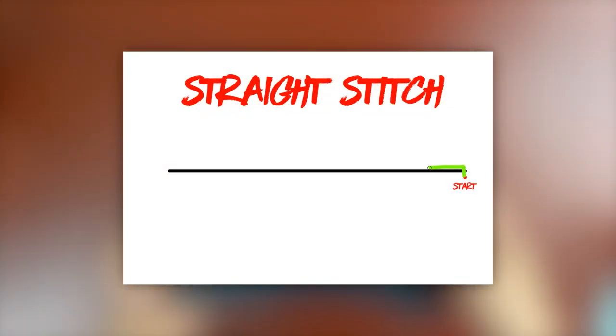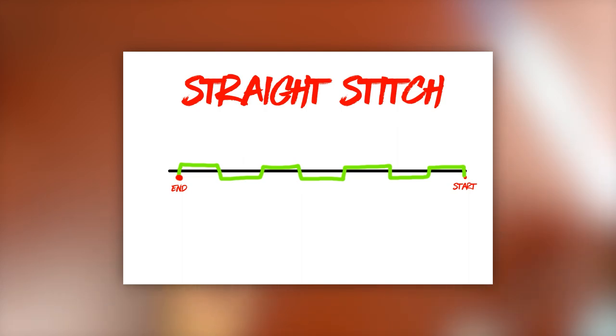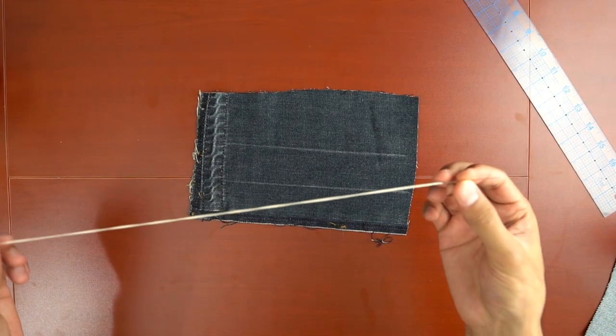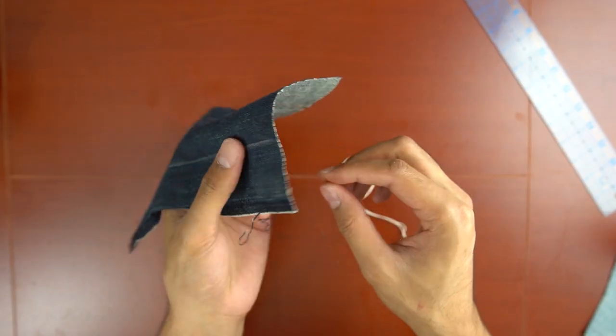The first stitch is the straight stitch. We're going to start by poking the thread from underneath to hide the knot. Following the line, the process is pretty simple. All you have to do is go in, move down the line a bit, and then out, and then move down the line a bit, and repeat.